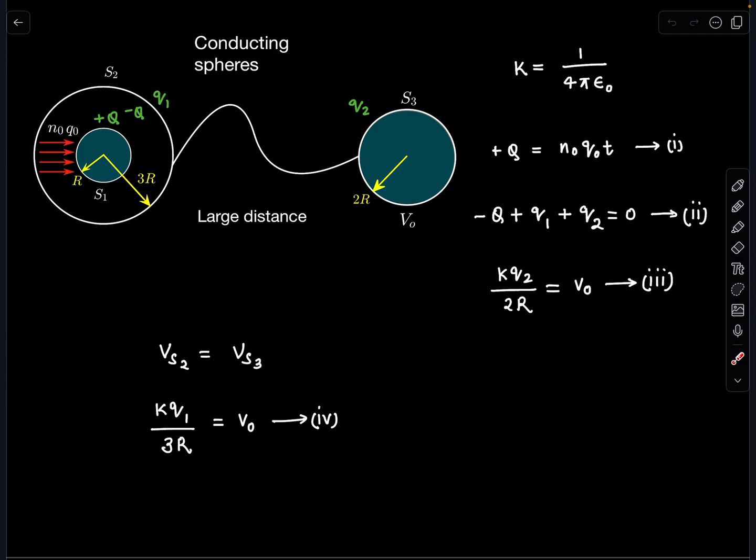The very first thing: in time t₀, how much charge is given? That is capital Q. I can simply write it as Q = n₀ × q₀ × t₀. That is the total charge on S1.